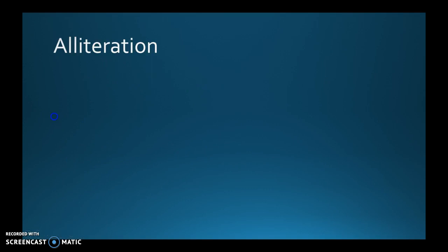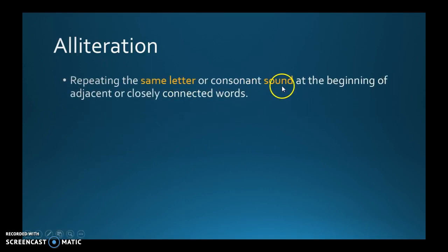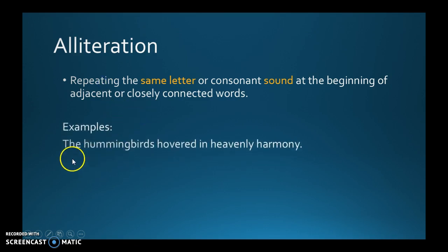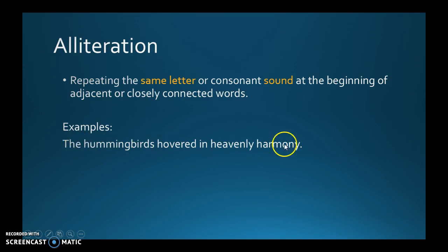Last but not least is alliteration. Alliteration is basically when you repeat the same letter or consonant sound — because some letters sound the same, like S and C, or C and K — at the beginning of adjacent or closely connected words. This is a literary and narrative device, but it's not as common; you see it more in poems than in narration. An example: 'The hummingbirds hovered in heavenly harmony.' You're using the same consonant sound throughout — that is alliteration. Another example: 'Patricia went to the party and pretended that she was a people person.'